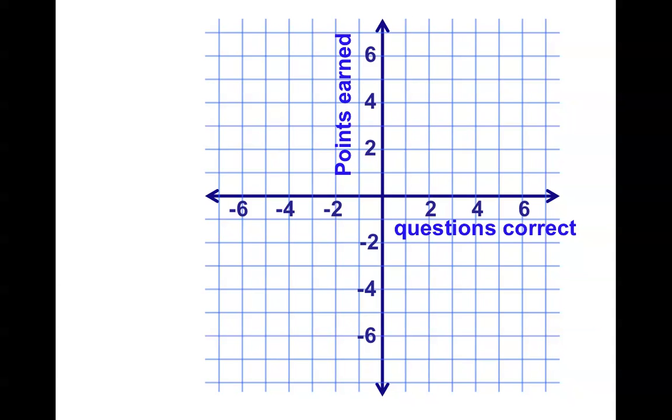Here are the questions you get correct on the x-axis, and the points earned are on the y-axis. If you get zero questions correct, you earn zero points. If you get one question right, you get two points, two questions, four points, and notice, it makes a straight line that goes right through the origin. So this is direct variation.